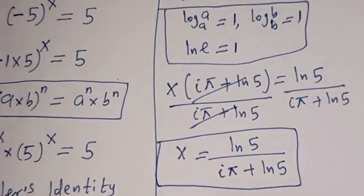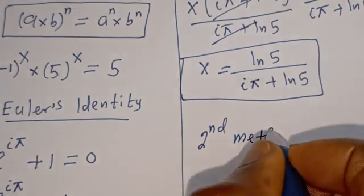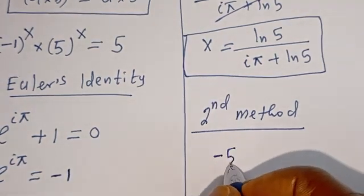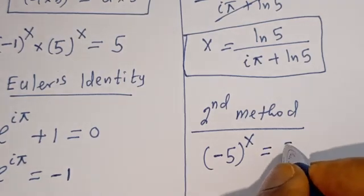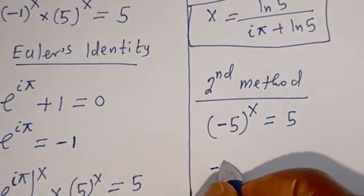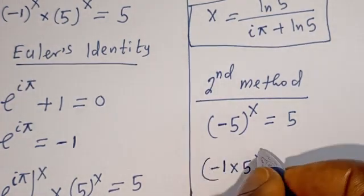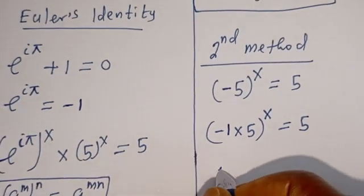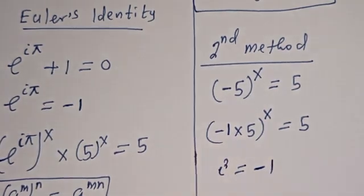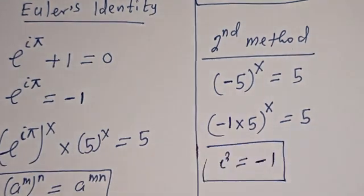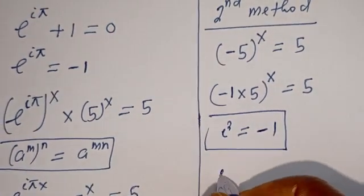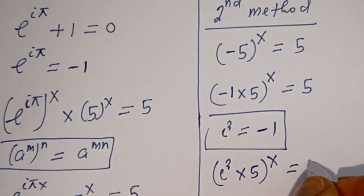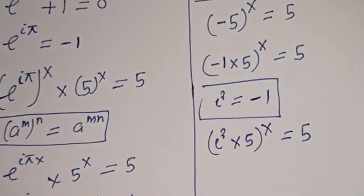Now, let's consider the second method. From the second method, we have the given equation: minus 5 to the power of s is equal to 5. This is the same thing as minus 1 multiplied by 5, all to the power of s, is equal to 5. Now, we know that i squared is equal to minus 1. So, this becomes i squared multiplied by 5, all to the power of s, is equal to 5.